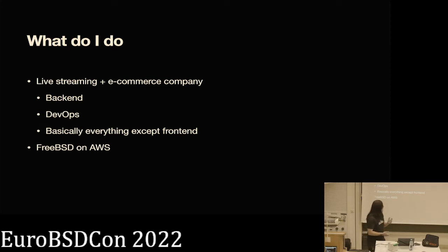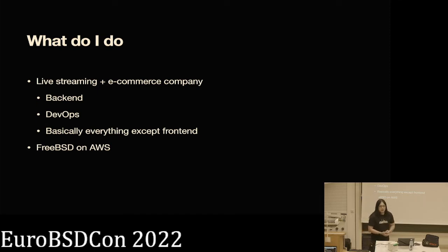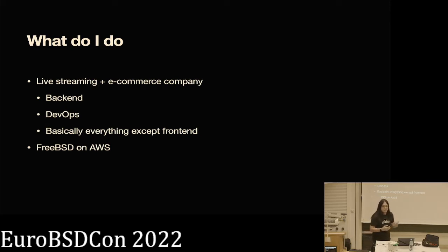We picked FreeBSD running on AWS. Originally it was just because I'm more familiar with it — we needed to get things up super quick, so let's stick with FreeBSD. Later we thought about switching to Linux and Docker, but it's funny because our application is mostly written in Scala with some Go. In terms of performance or deployment, it doesn't really make a huge difference between operating systems, and we don't really have any problematic system dependencies.